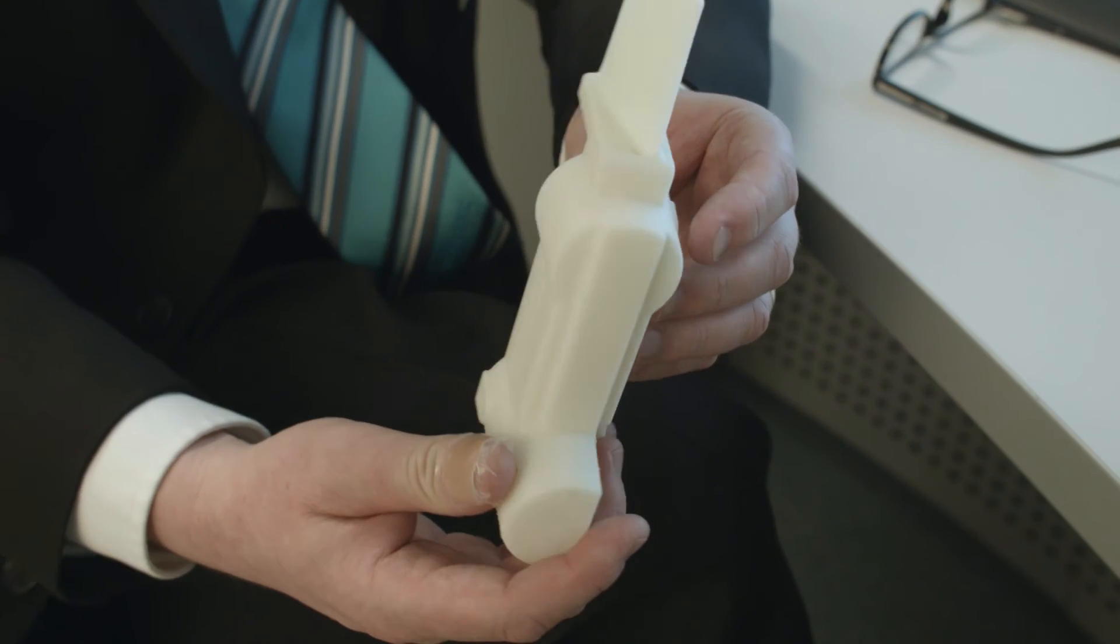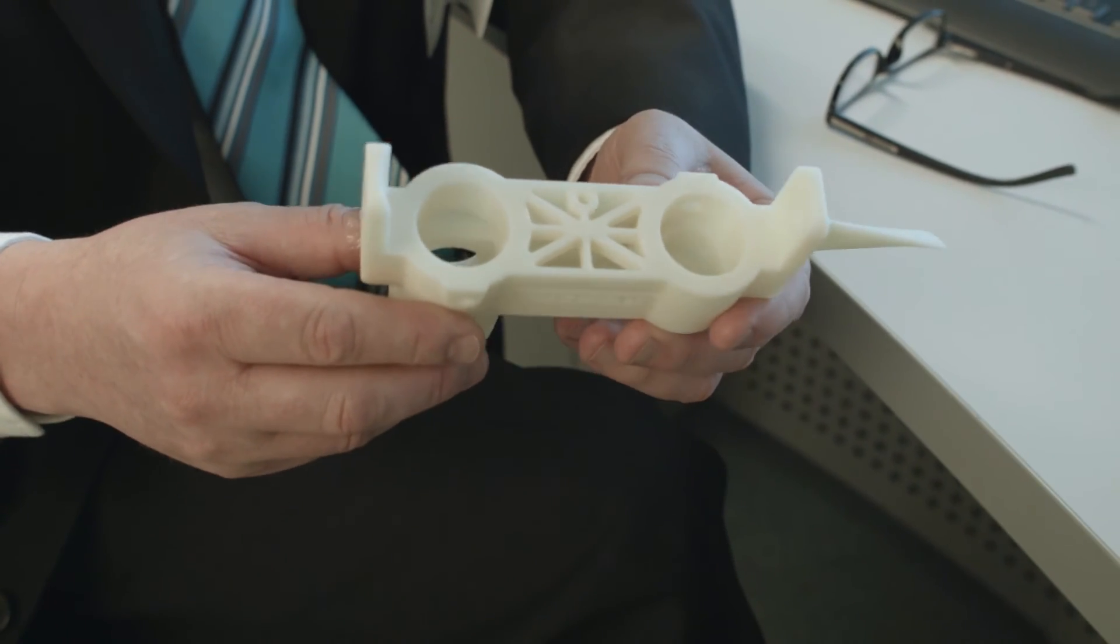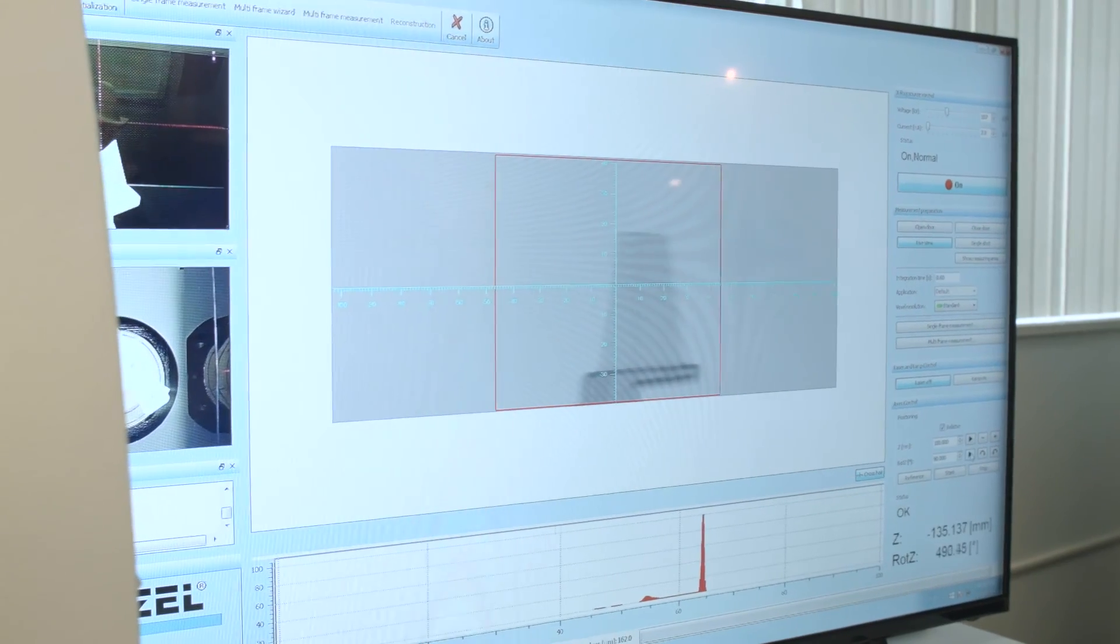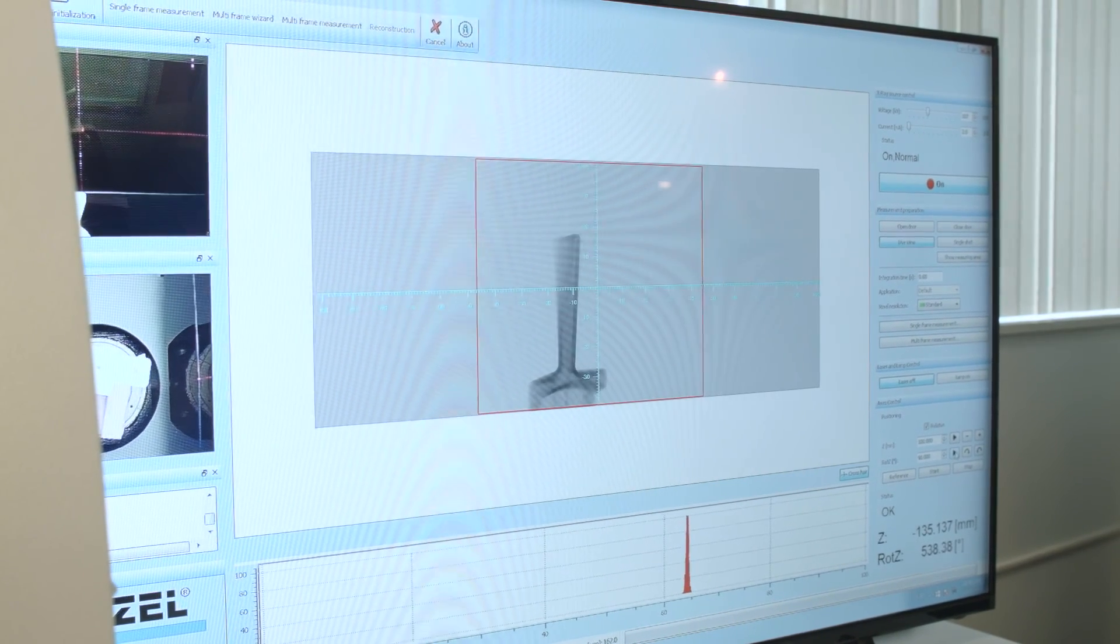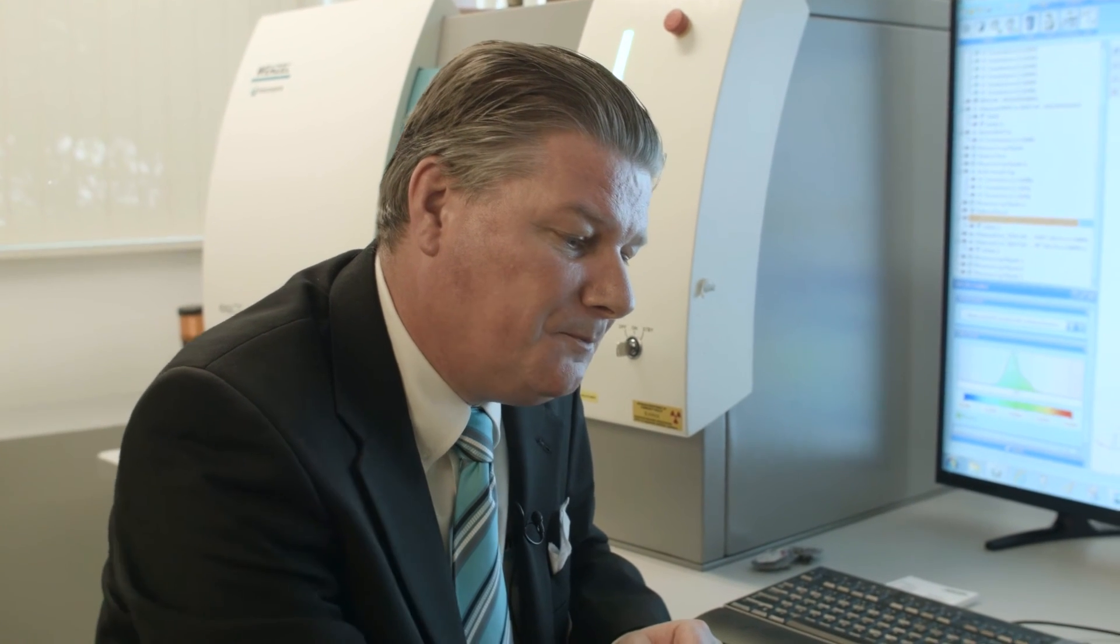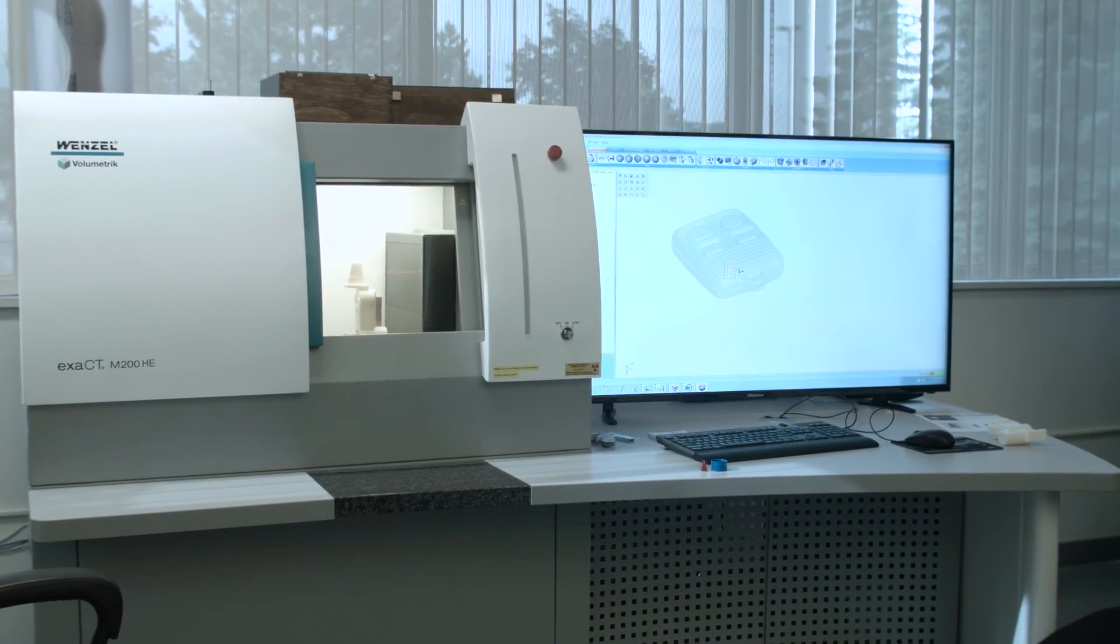Some materials are easier to get through than others. Plastic, pretty much any thickness of plastic is no problem. My job is to choose amongst the many solutions we have which is the one that is most appropriate. If it's something that requires measuring internal features that you can't see, possibly inside an assembly that you don't want to open up, this is the only game in town.